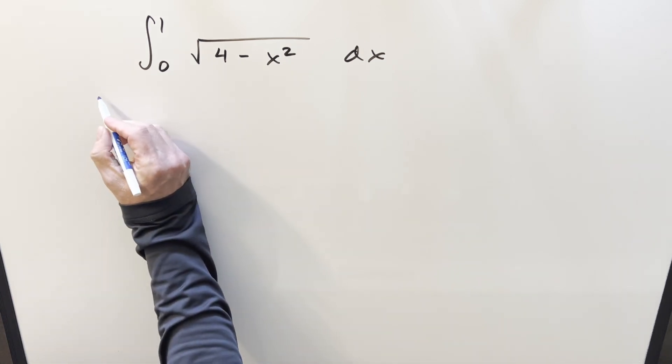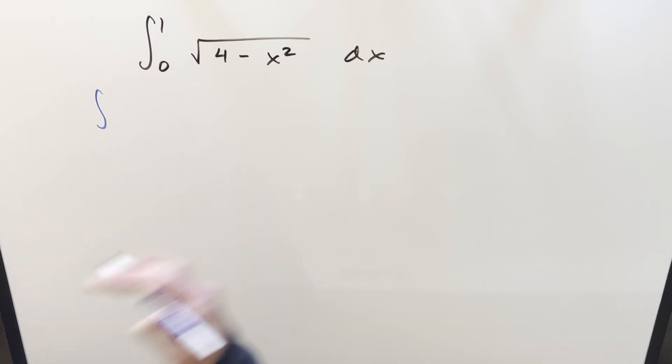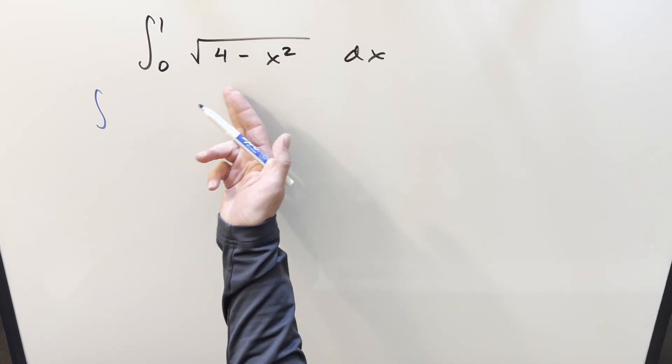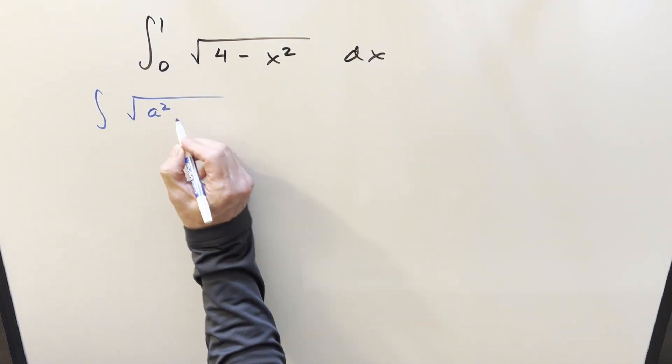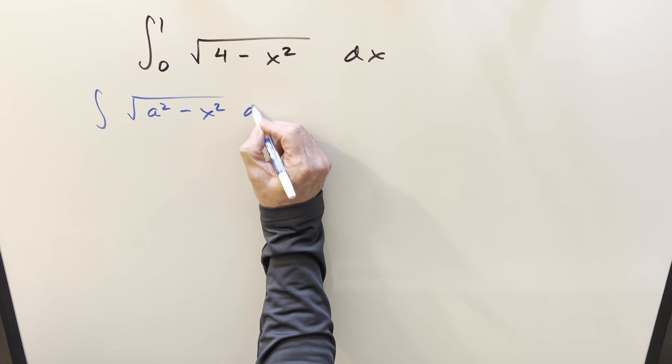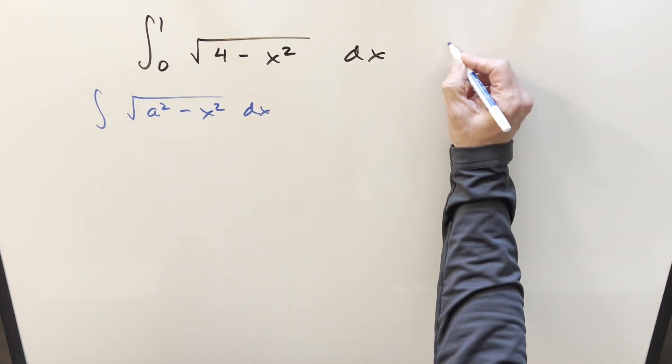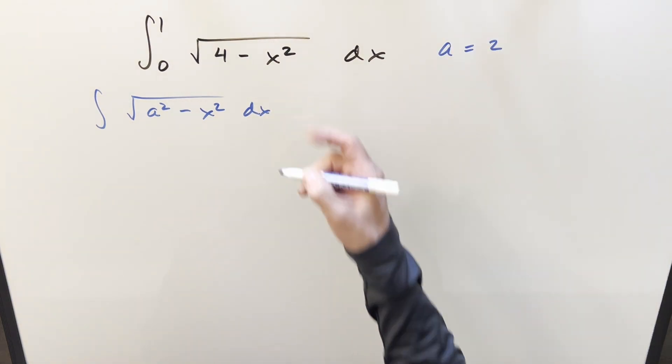So for a starting point, I'm going to want to do the indefinite integral so we can kind of see what our formula is. That way it's going to be more versatile if you've got the situation but with different bounds. We'll call this a squared here. So we'll have a squared minus x squared dx.